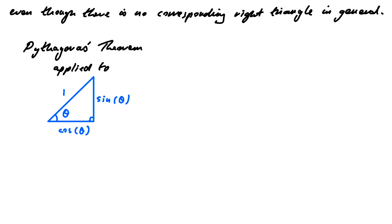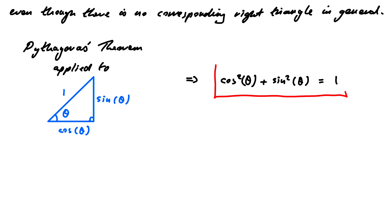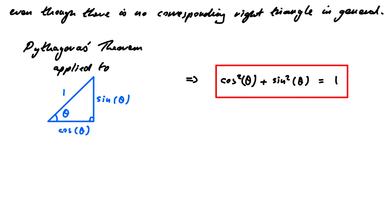Pythagoras' theorem states that in a right triangle, the opposite squared plus the adjacent squared equals the hypotenuse squared. In this case, we get cos²θ + sin²θ = 1², which equals 1. So this is a fundamental relationship between sine and cosine — not really obvious until you take this right-angle approach.